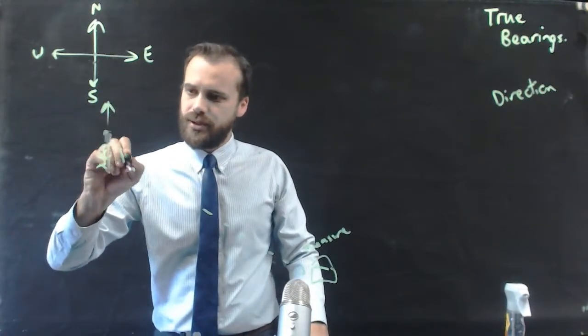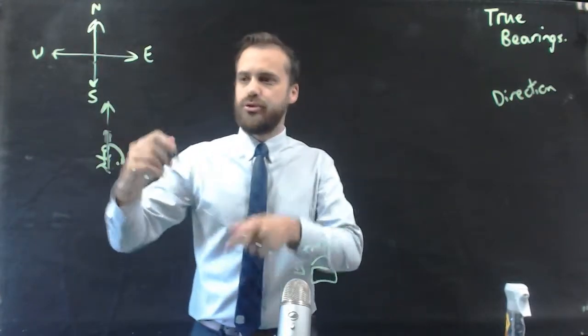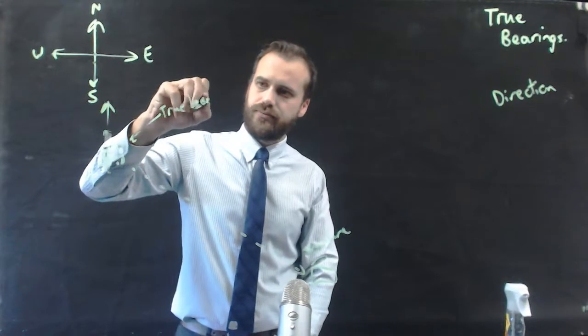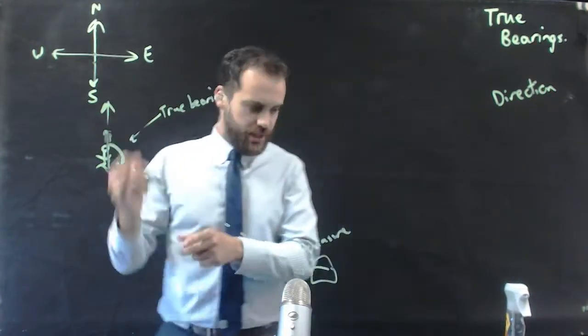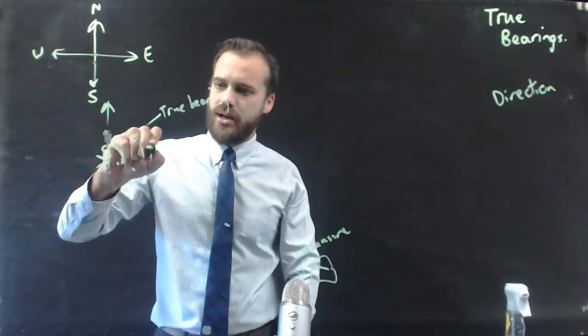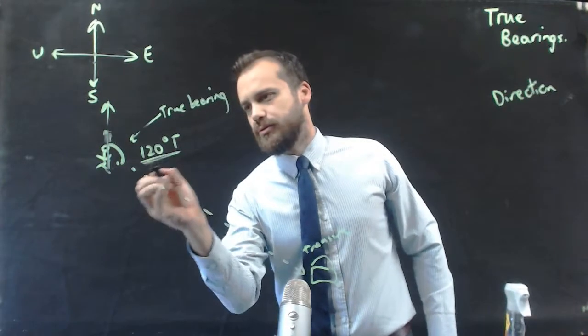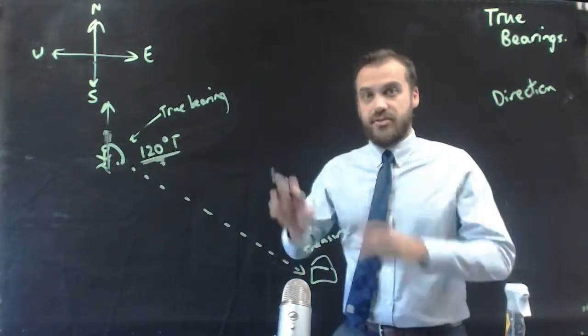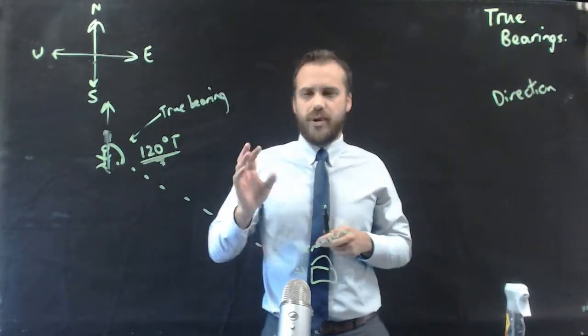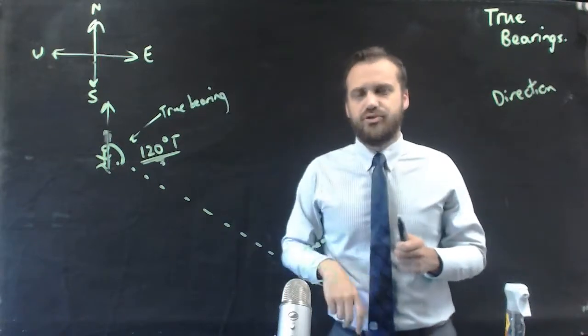Now, the angle here is the true bearing. Now, if I take a protractor and I measure that true bearing, that's about 120 degrees true. So if you say to that guy, if you walk on a bearing of 120 degrees true, you will run into some treasure.